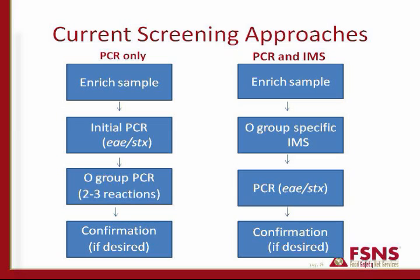The second approach uses PCR combined with IMS. Again you would enrich the sample, but in this case you perform an O group-specific IMS step before proceeding with the PCR. The idea is that this may reduce the number of potential positives going through the process. You then do PCR for EAE and STX, potentially also for the O group, and move on to confirmation if desired.